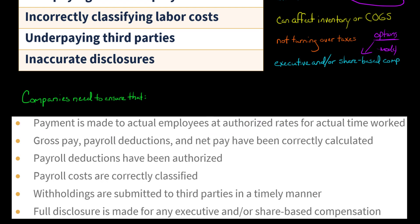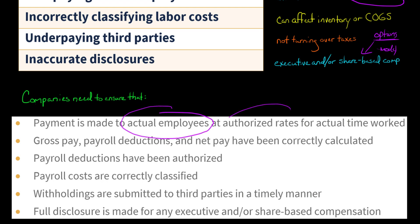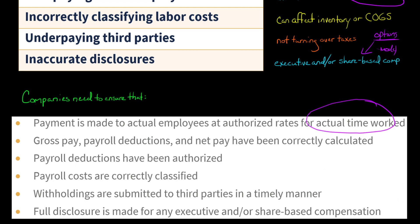All of this is important, but we really want to focus on making sure that when compensation is being paid to employees, those are actual employees — not fictitious employees, not people who were fired long ago and kept on the payroll. Actual employees should be paid at authorized rates, meaning the amount they're supposed to be paid for actual time worked.